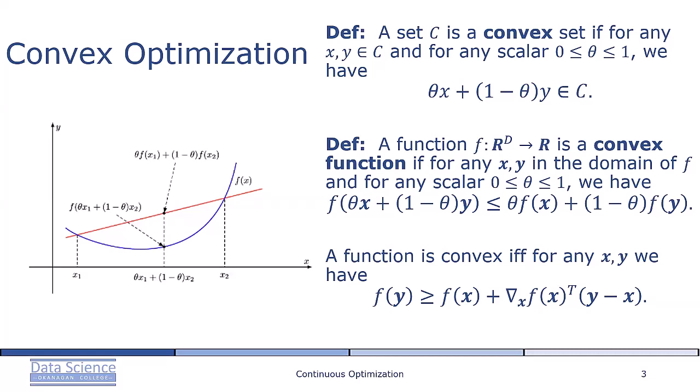If the function f(x) is twice differentiable—that is, the Hessian matrix exists for all values in the domain of the function—then the function f is convex if and only if the second derivative of f is positive semi-definite.